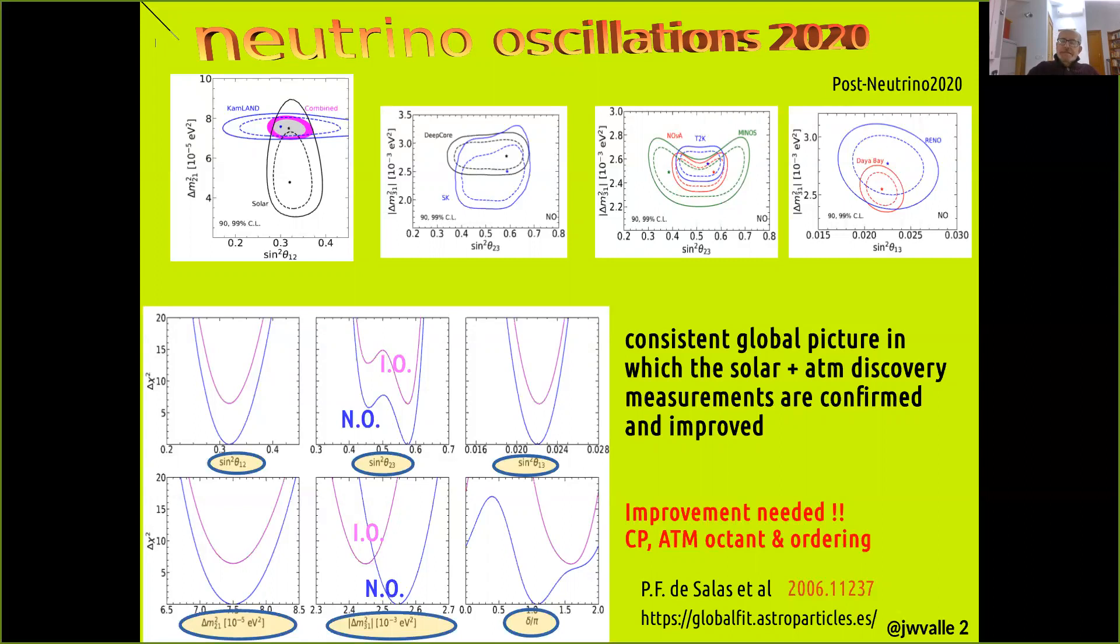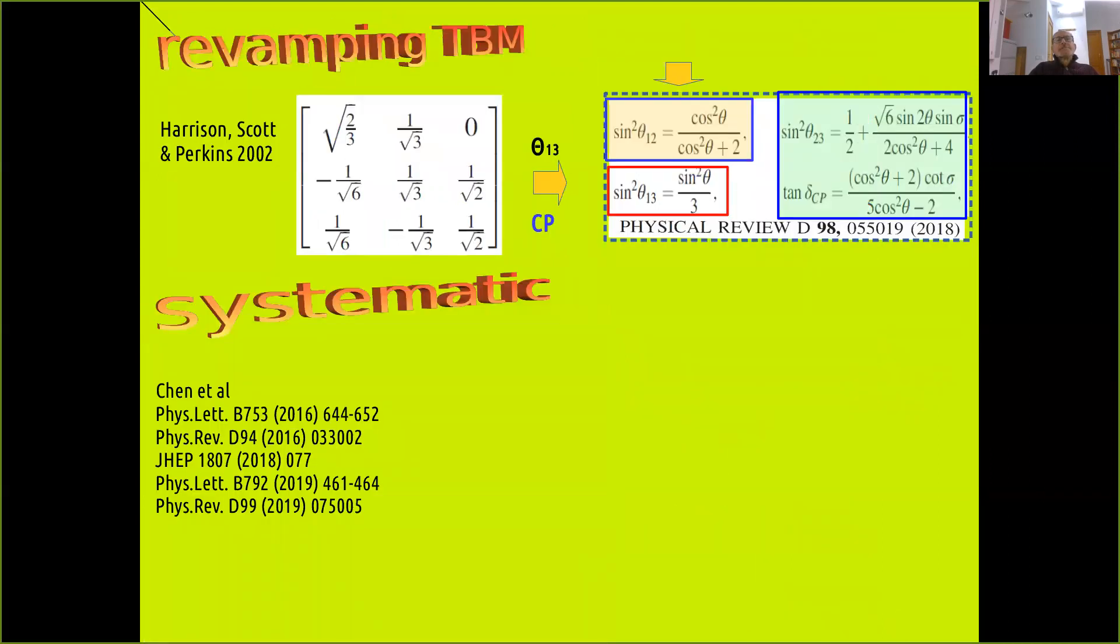So we have basically three loose ends where improvement is needed concerning the octant and ordering determination, and of course the CP phase determination. These form the target of upcoming experiments which I have no time to describe. Instead I will move directly to theoretical interpretation, starting from a phenomenological inference of the pattern of neutrino mixing directly from the oscillation data.